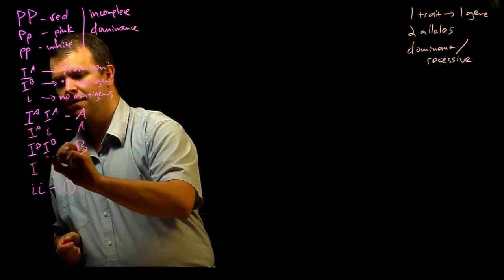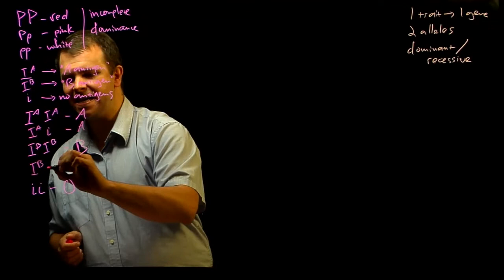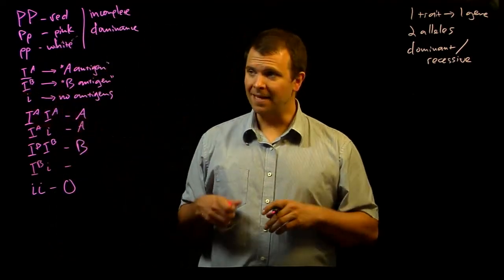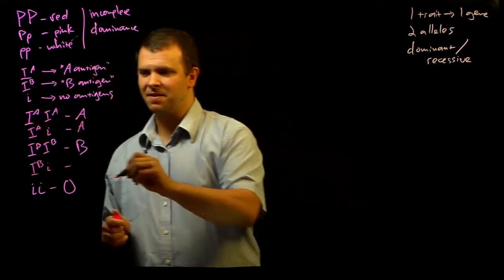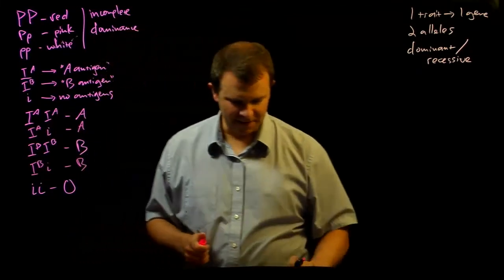If you are a heterozygote IB, little i, you'll have one allele that is making an enzyme that makes this B antigen, and you'll have type B blood.